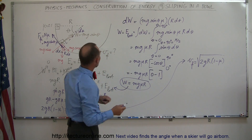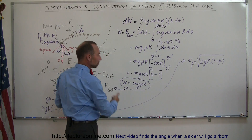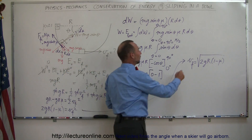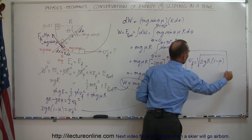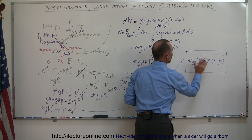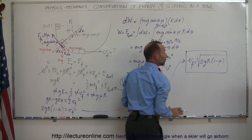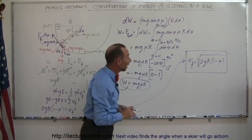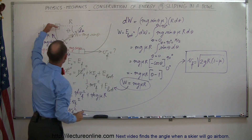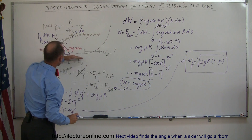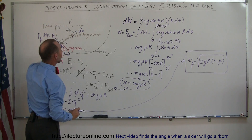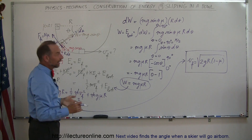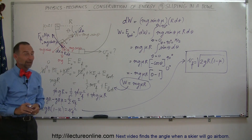Since no numbers were given, this is the final answer: v_final = √(2gR(1 − μ)), the velocity of the mass as it slides down a bowl with friction. And that's how you do that problem.